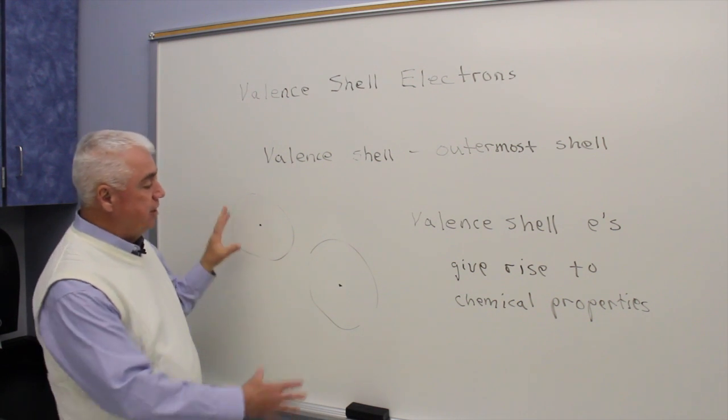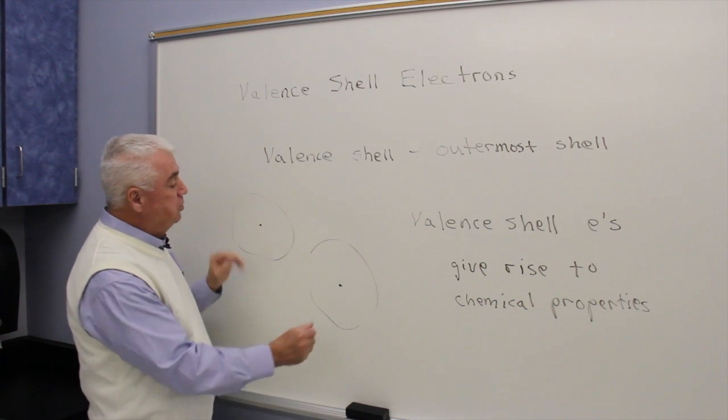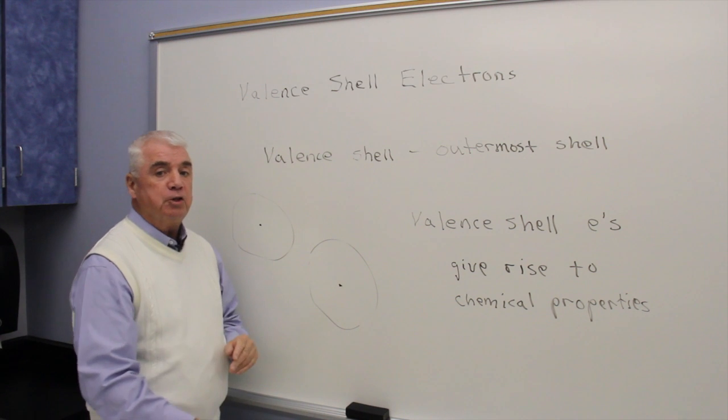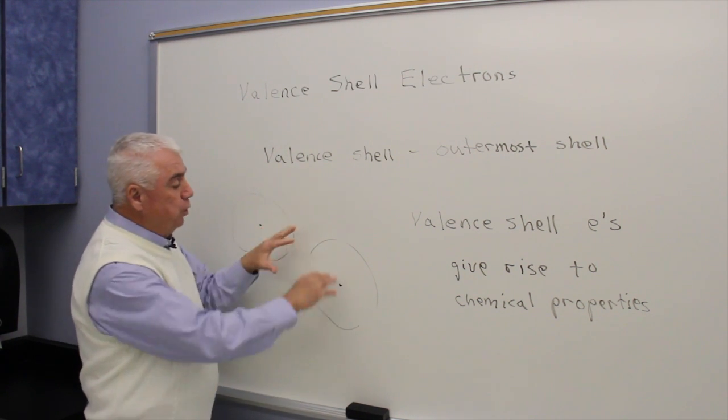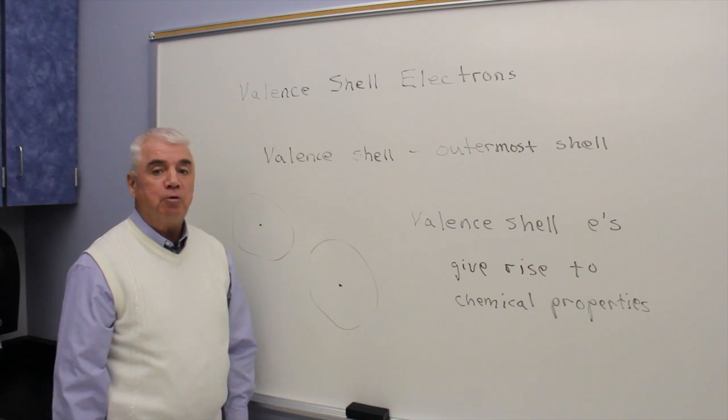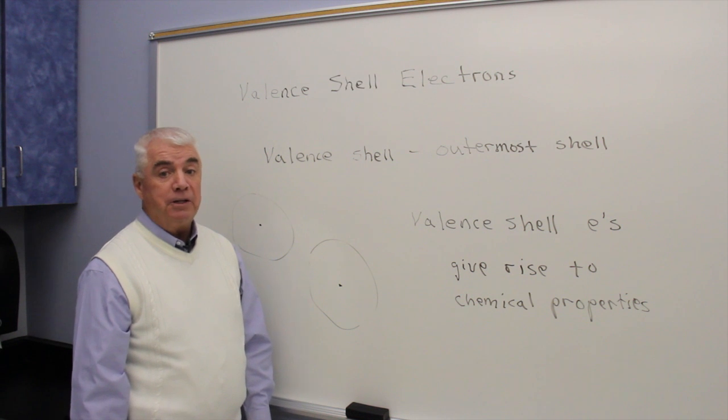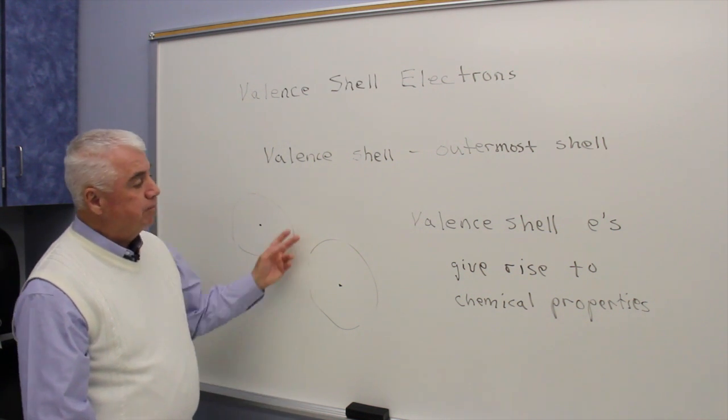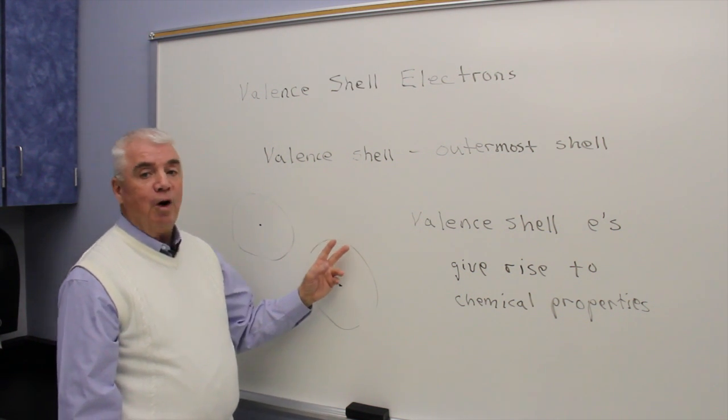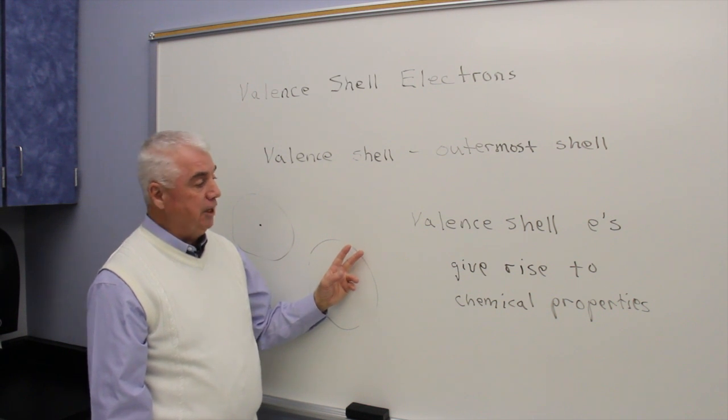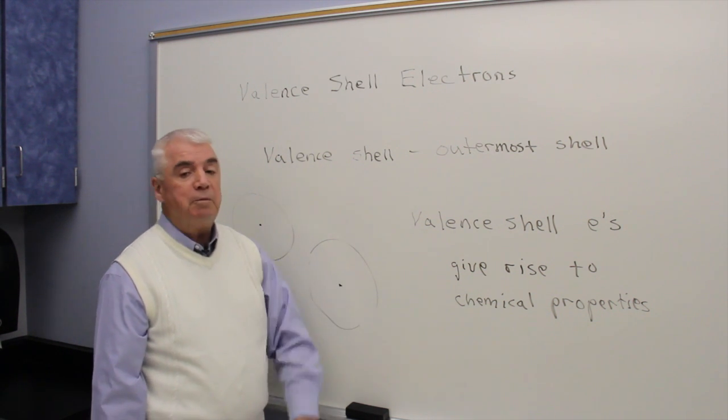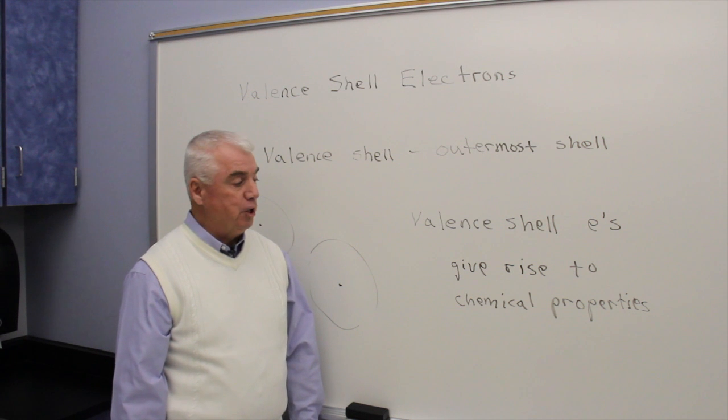If we had two atoms that were going to interact with each other, as they approach one another, it's going to be these electron clouds that really bump into each other, and the outermost electrons would play an especially key role, and those would be the electrons in the valence shell.